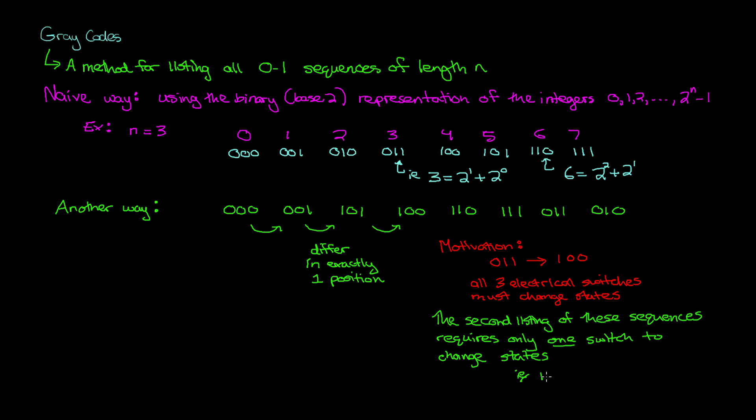If we take a look at the sequence 1, 0, 1, we next need to go to 1, 0, 0. So all we have to do is change the third switch from a 1 to a 0. So this is an example of a gray code.